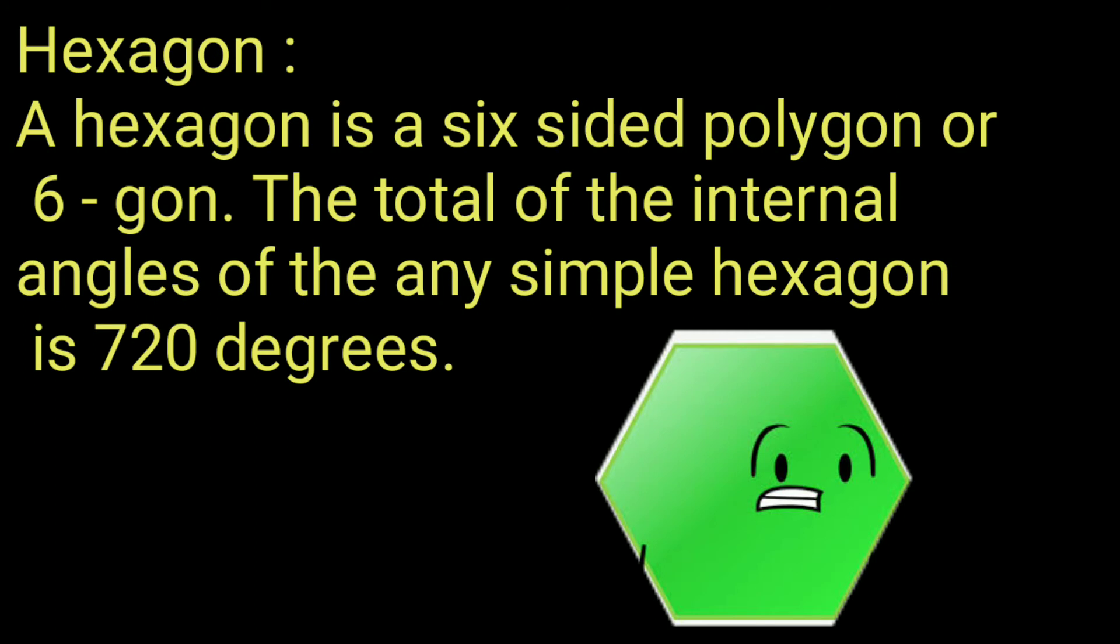Hexagon: A hexagon is a six-sided polygon or six-gon. The total of the internal angles of any simple hexagon is 720 degrees.